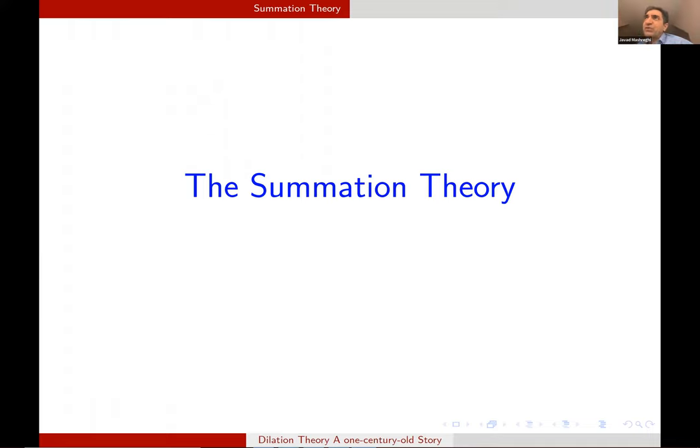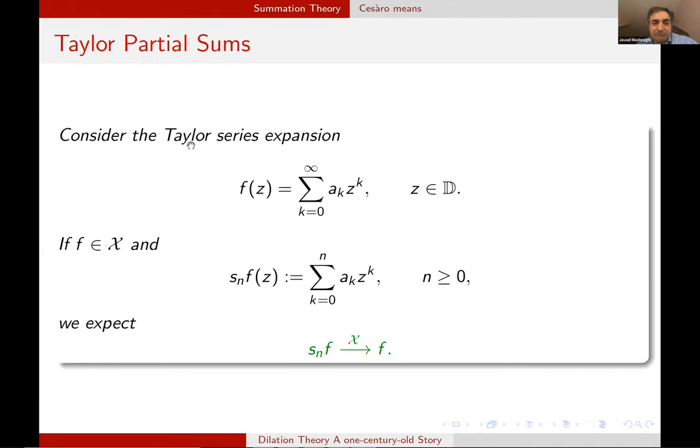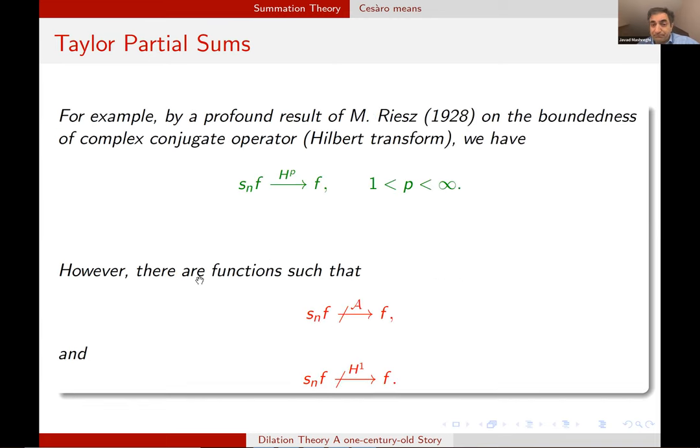Consider a Taylor series expansion like this. Usually we chop. We don't go up to infinity. And we obtain a polynomial. And we expect that this Taylor polynomial converges to F. We expect. It's not always the case. For example, we know that S_n of F goes to S in H^p. Non-trivial result. This is a immediate consequence of Marcel Riesz' theorem on the boundedness of Hilbert transform on L^p. But it fails. If we apply it for p equal to infinity, which is this algebra, it fails. And for p equal to one, it also fails.